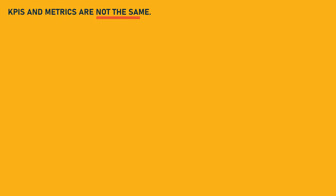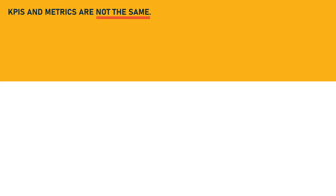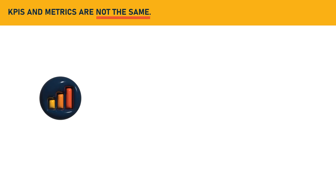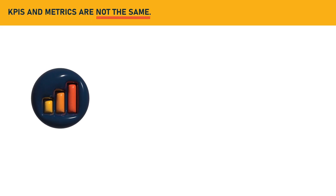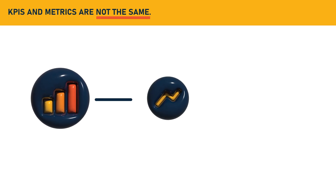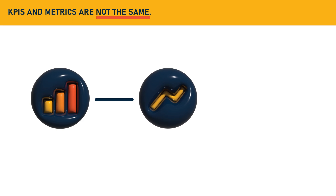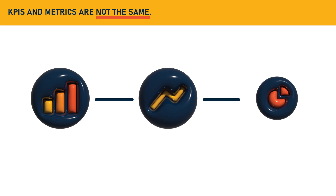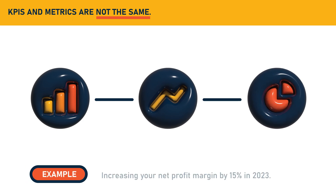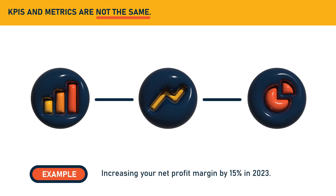But let's make it clear that KPIs and metrics are not the same. KPIs have a direct impact on growth and can be obtained through a combination of different metrics. Increasing your net profit margin by 15% in 2023, for instance, is a type of KPI.